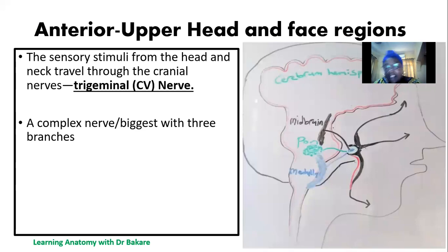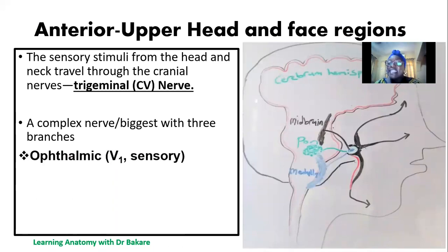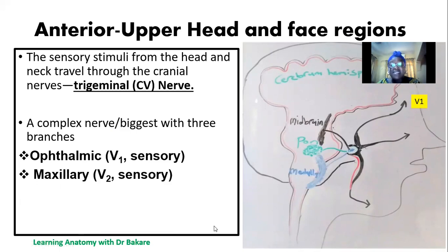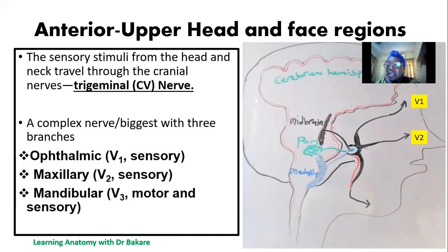The trigeminal nerve is the fifth cranial nerve. It is the most complex nerve and also the biggest. It is further subdivided into three branches. We have the ophthalmic branch, which is the first division — this is a sole sensory nerve that carries sensory stimuli from the upper part of the face. The second branch is the maxillary nerve, which is also solely for sensory innervation. The third branch is the mandibular division, which is made up of both motor and sensory components and is the most distal branch. All in all, the bulk of the trigeminal nerve is made up of sensory components.